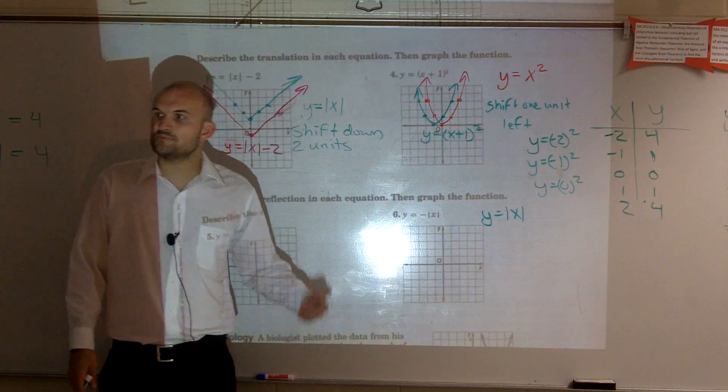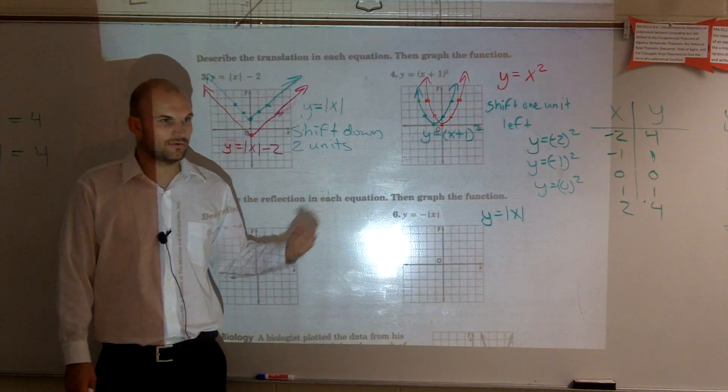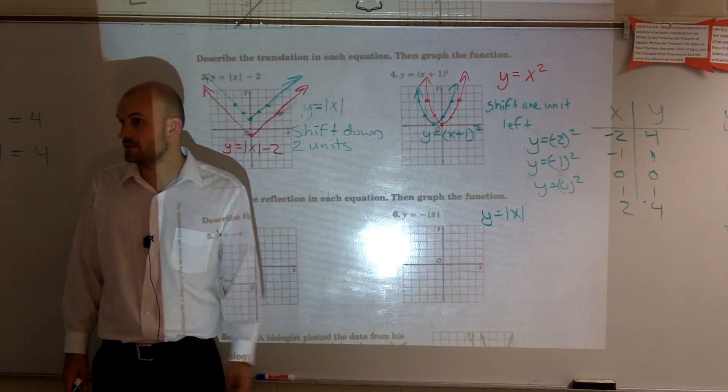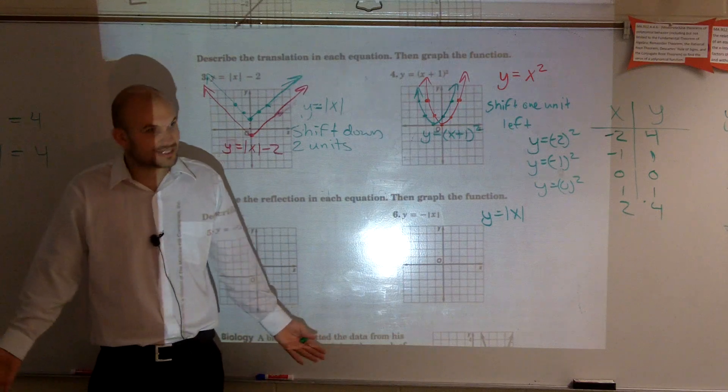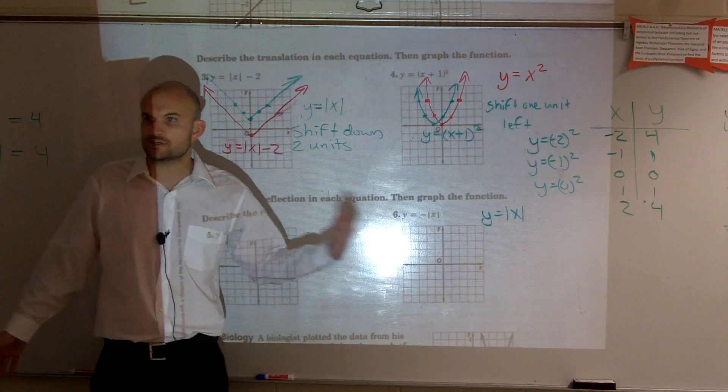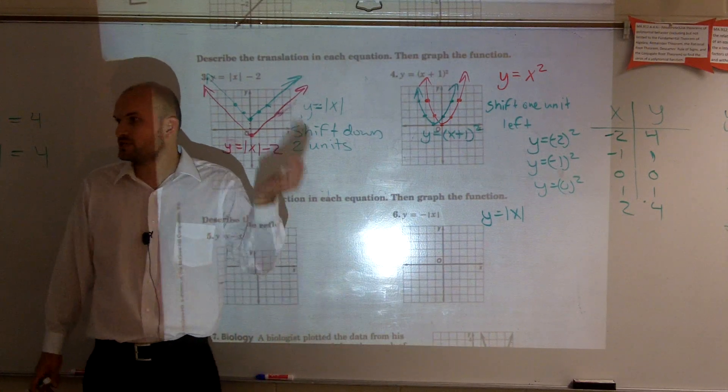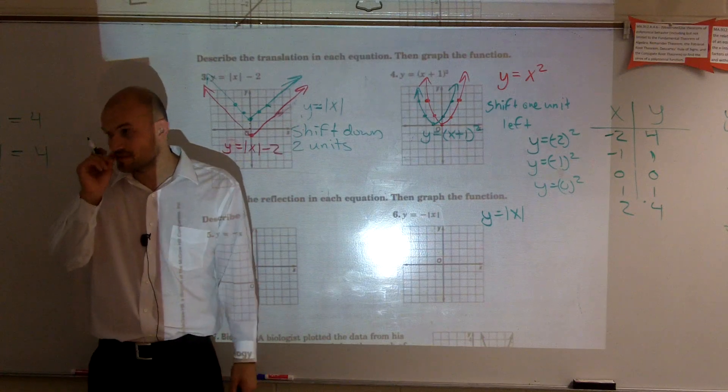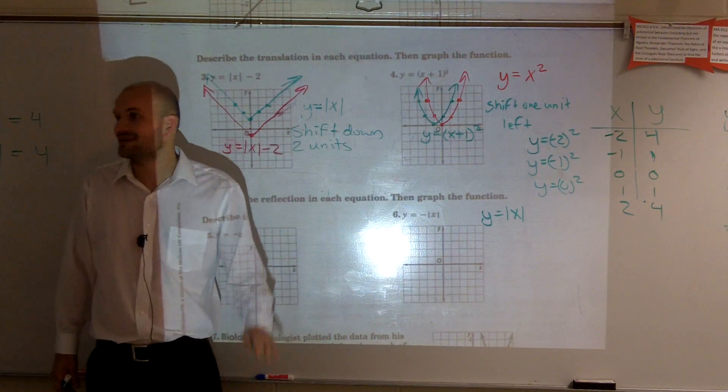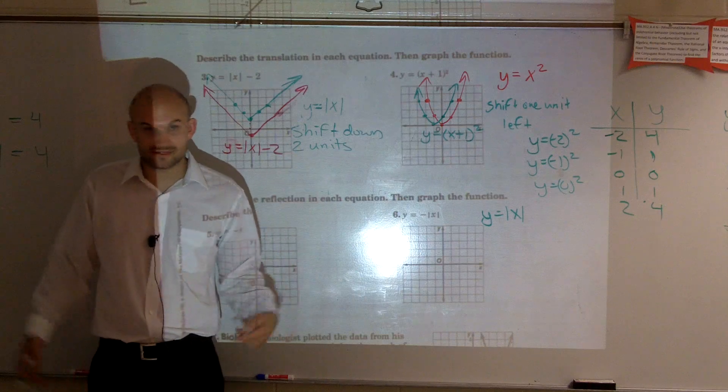Now, do we have a plus or minus c anywhere? Are we adding or subtracting anything? No. So do we have any translations? No. We're not going to shift the graph left, right, nor are we going to shift the graph up or down. Yes, it's pretty crazy, I know. We're not going to shift left, right, or up, down. Does that make sense?